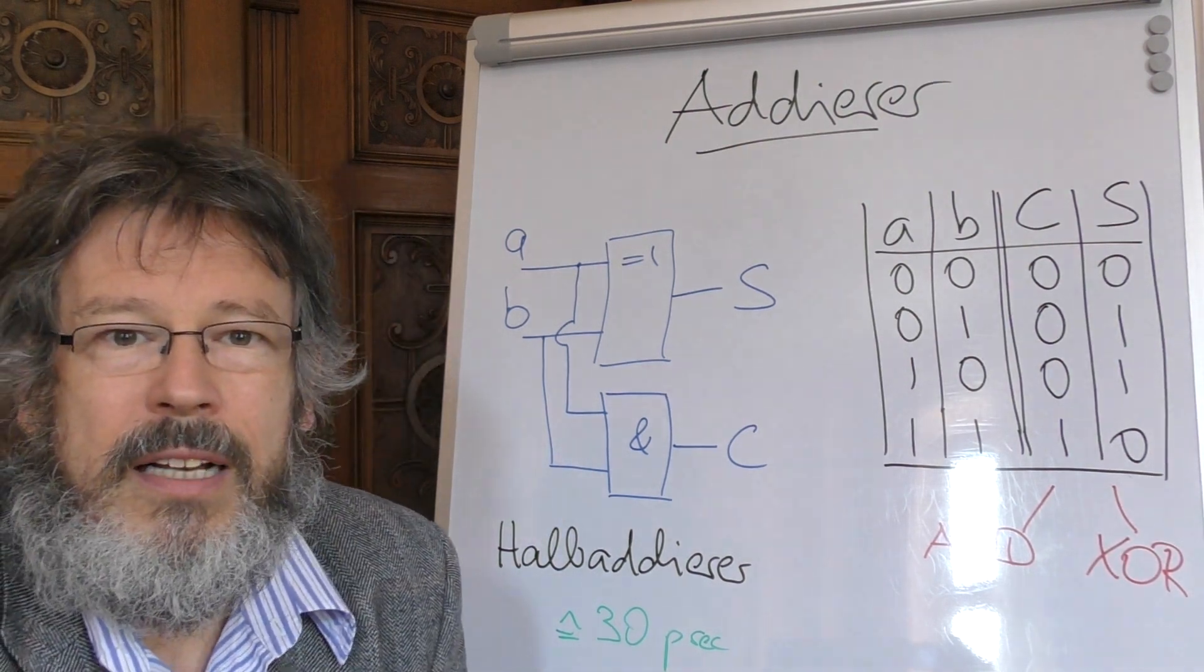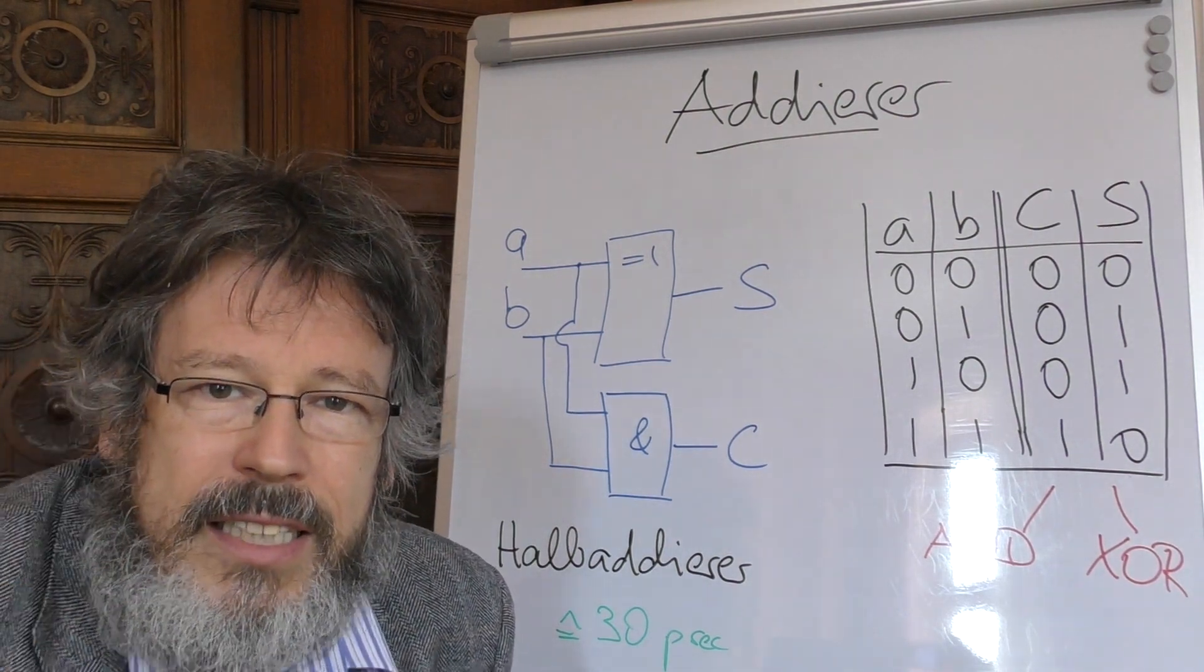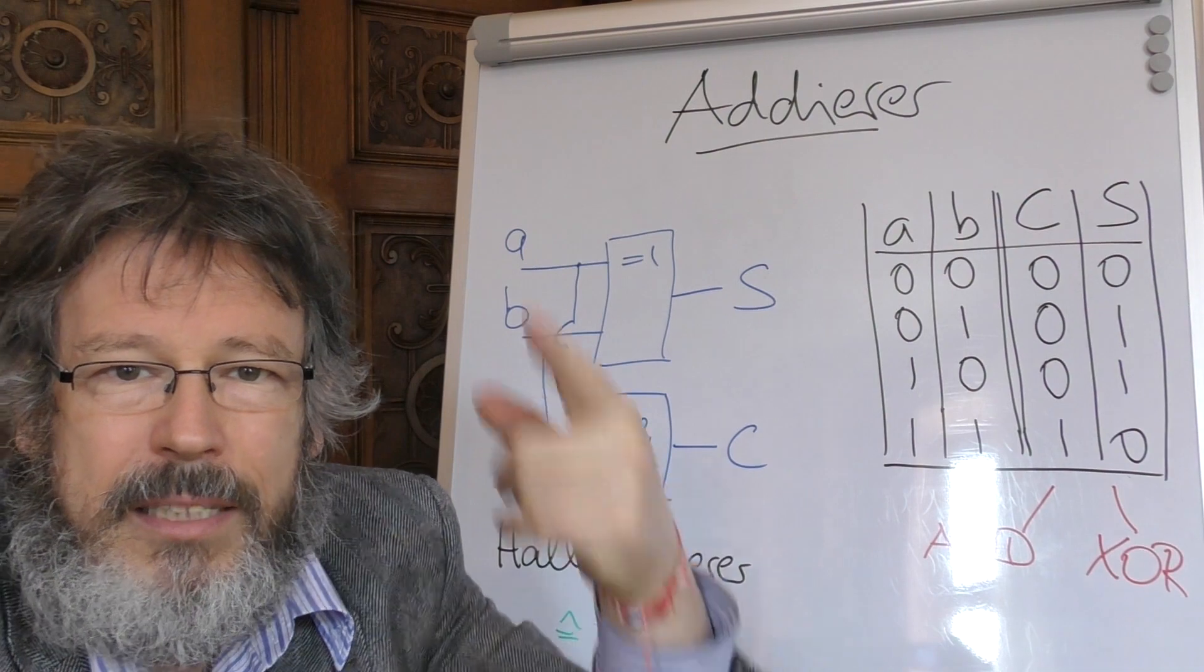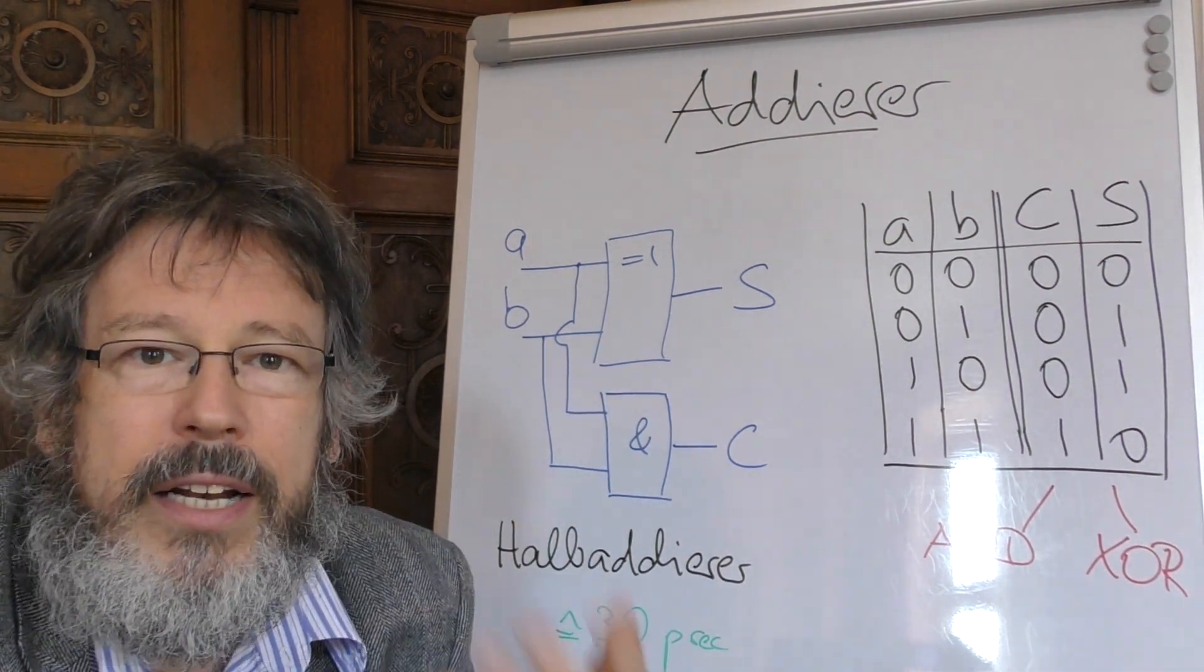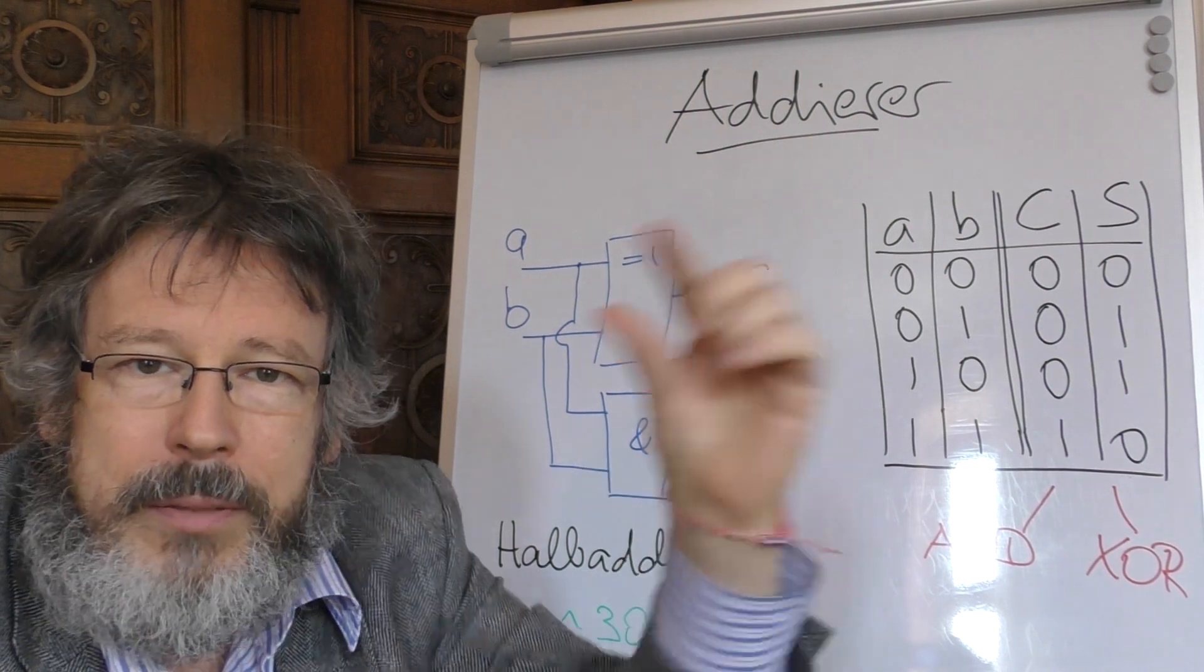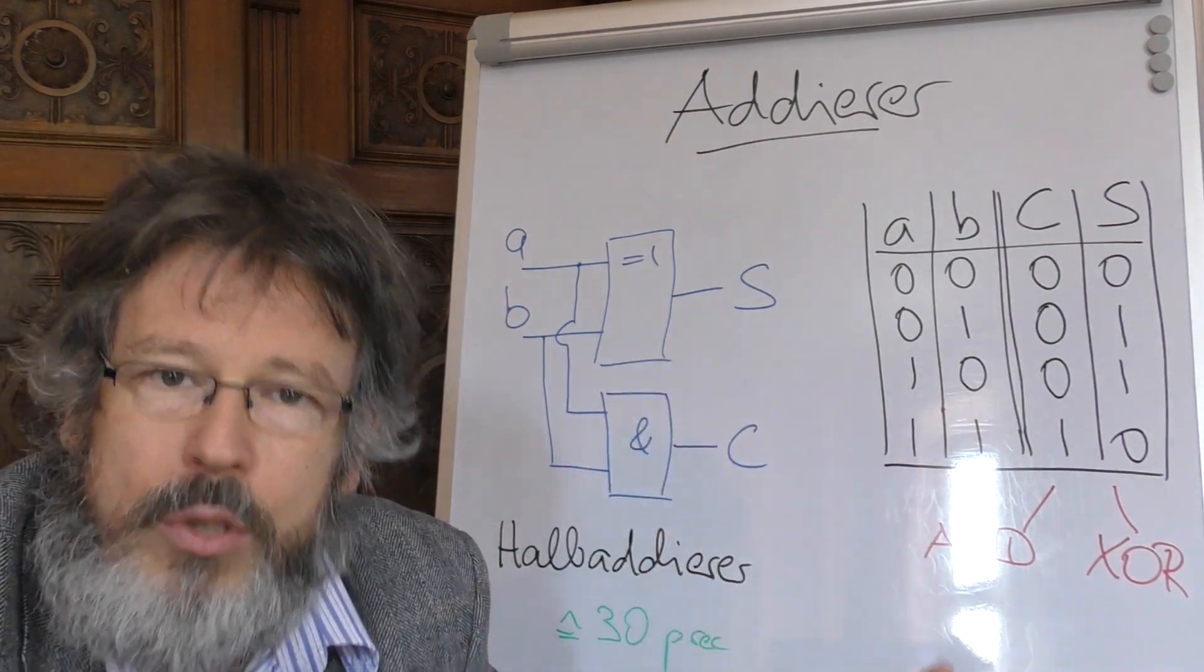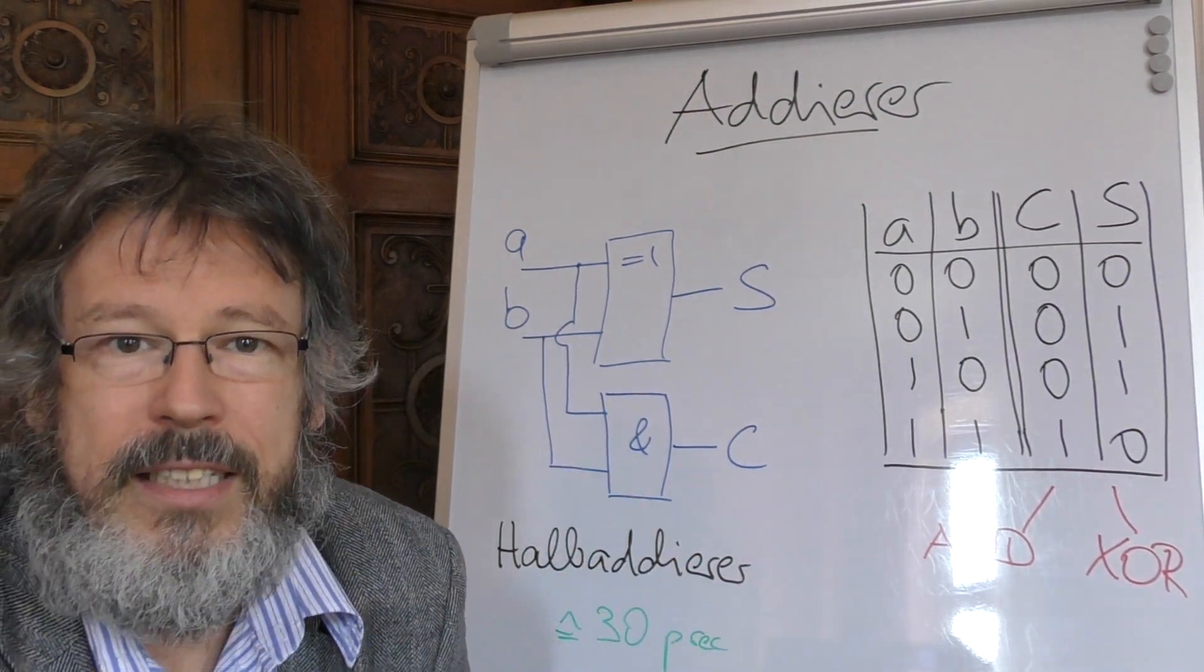Das ist also der einfachste Fall. Der nächst komplizierte Fall ist, was passiert denn, wenn ich Binärzahlen addieren möchte, die mehr als eine Stelle haben. Das wissen wir ja aus der Schule. Wie rechnen wir denn da mit größeren Zahlen? Wir fangen an der letzten Stelle an, zählen die beiden letzten Ziffern zusammen, schreiben das Ergebnis hin, haben eventuell einen Übertrag, genau dieses Carry-Bit, und gehen dann zur vorletzten Stelle über. Da gibt es wieder zwei Ziffern, wir zählen die zwei Ziffern zusammen, zählen dann den möglicherweise vorhandenen Übertrag noch dazu, berechnen daraus die Summe, schauen, ob es wieder einen Übertrag gibt und so weiter. Und genau das machen wir hier auch. Das nennt man dann einen Volladdierer.